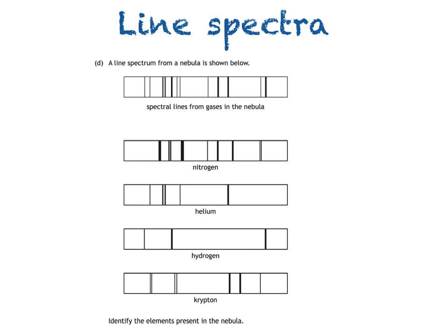We'll start with nitrogen. If nitrogen is present in the nebula, then every line within its spectrum will be present in the line spectrum from the nebula. And you can see here that that's not the case, so nitrogen isn't present.